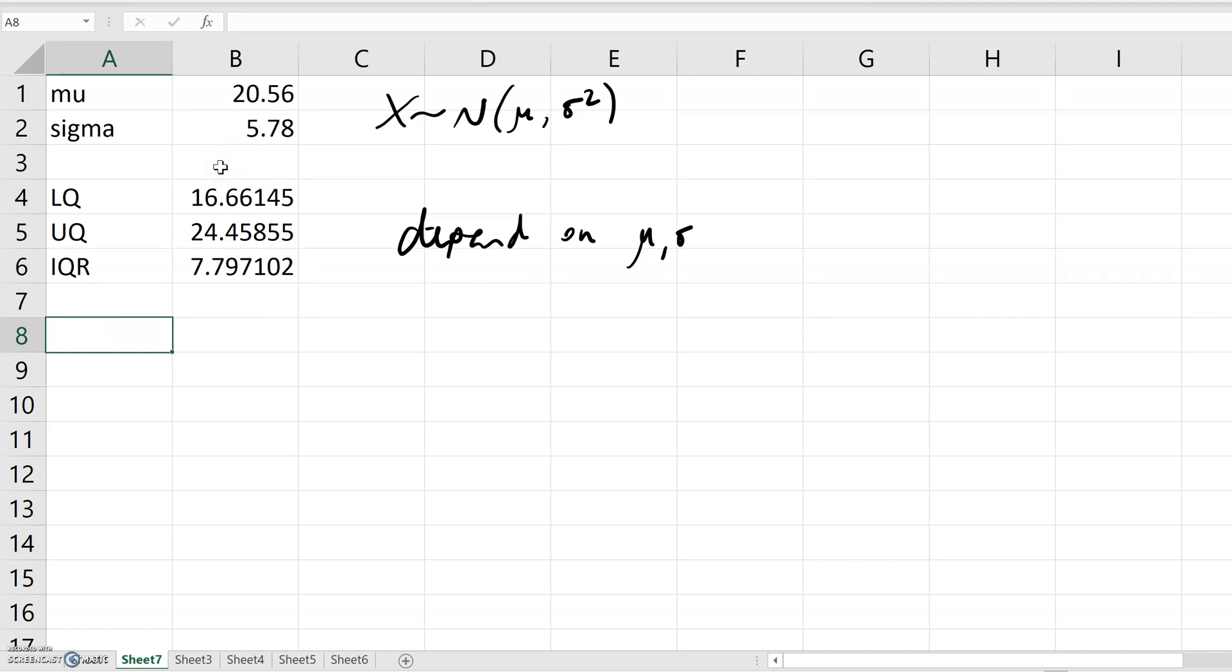The outlier thresholds, if we think back, lower quartile minus one and a half times interquartile range. And the upper threshold, upper quartile plus one and a half times interquartile range. So I can calculate that: lower quartile minus 1.5 times the IQR, and the upper quartile plus 1.5 times the IQR.